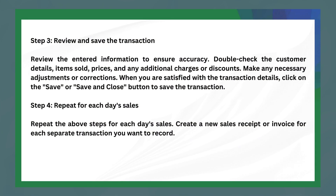The following step is to review and save the transaction. Review the entered information to ensure accuracy — double-check the customer details, items sold, prices, and any additional charges or discounts. Make any necessary adjustments or corrections, and when you are satisfied with the transaction details, click on the Save or Save and Close button.